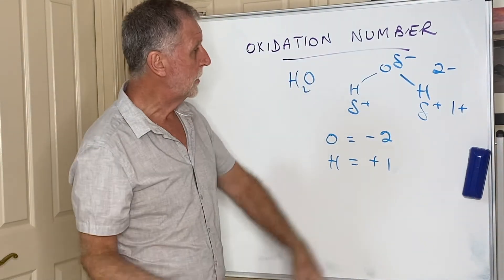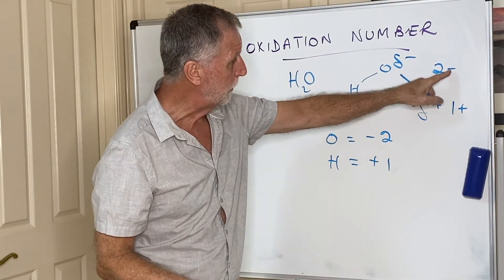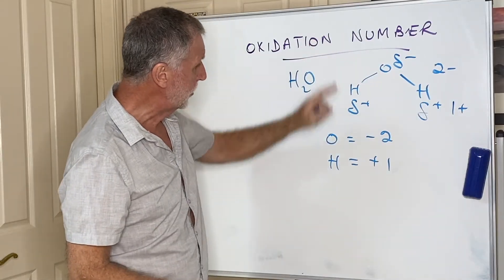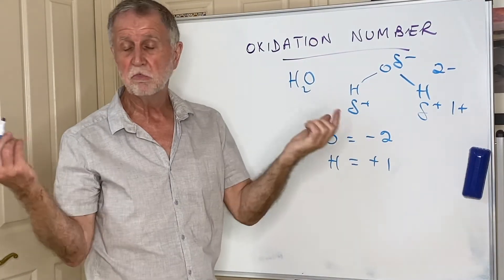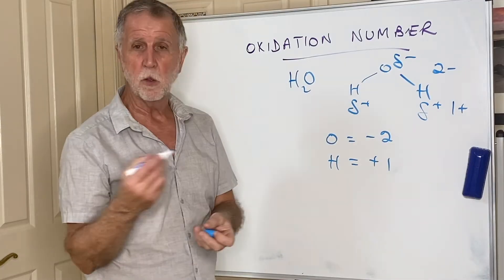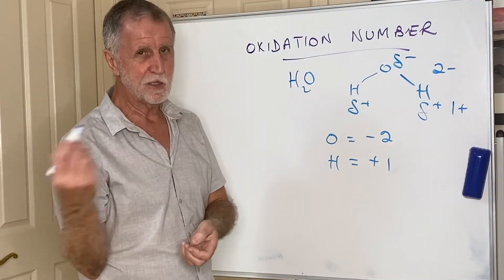Just a small point: when we do charges, we put the number before the charge. When we do oxidation numbers, we put the charge before the number. No big deal. I don't think they'd worry about it if we didn't do that, but that's the convention.